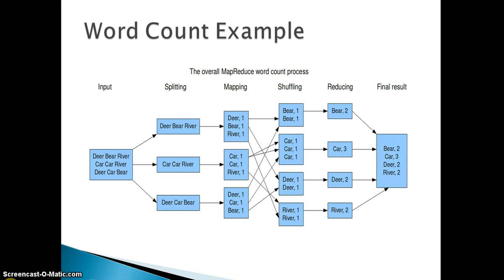Let's consider this is my input file and let's consider each line as one block of 64 MB. Like we discussed in our previous section, our input file will be split with respect to the block size defined during installation of Hadoop. So if our block size is 64 MB and each line is 64 MB, then these three lines would be divided into three separate parts. Each part is 64 MB — this is our first job of splitting our input file, as discussed in Hadoop architecture.